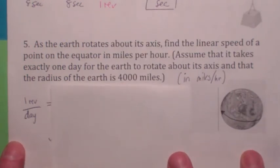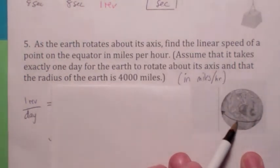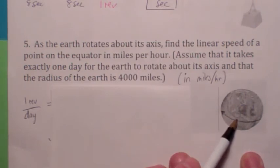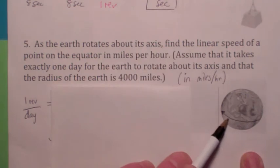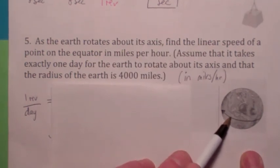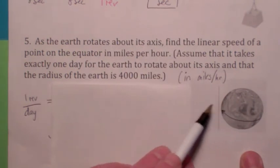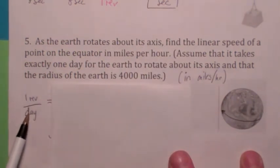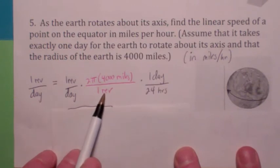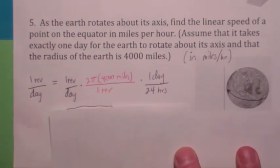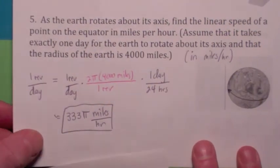Find the linear speed of a point on the equator of the Earth as it rotates. The Earth rotates one revolution per day — that's the angular speed. They want the linear speed of a point on the equator, which is important because the linear speed at the equator is going to be much greater than the linear speed of a point in the north or south. All we have to do is convert revolutions per day to miles per hour. The key step: one revolution equals the circumference, then convert days to hours. The answer is 333 pi miles per hour.